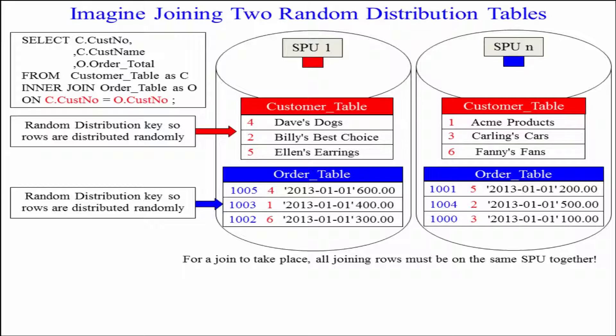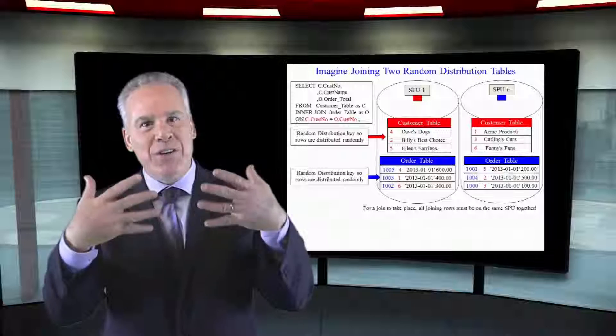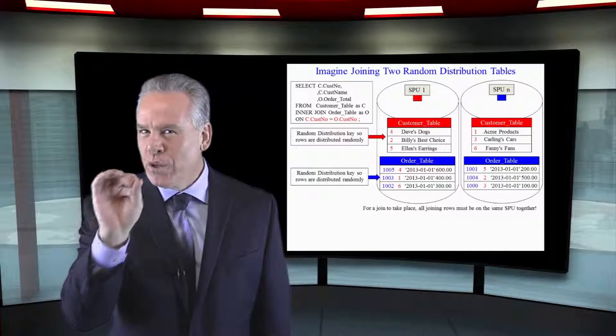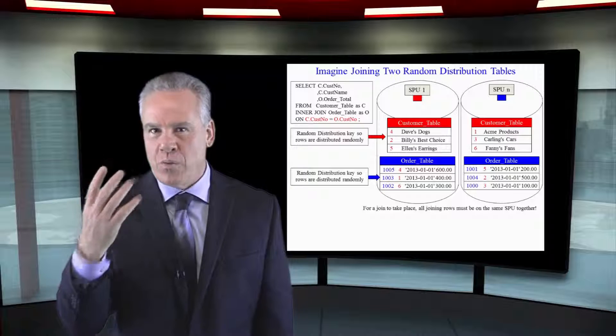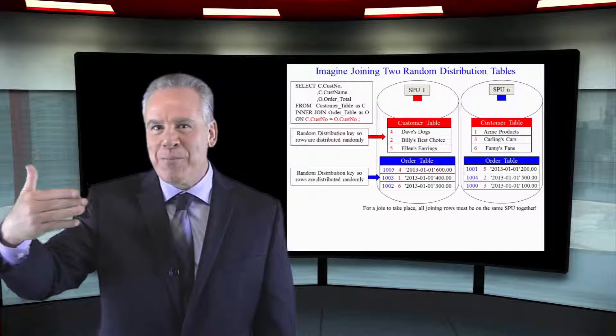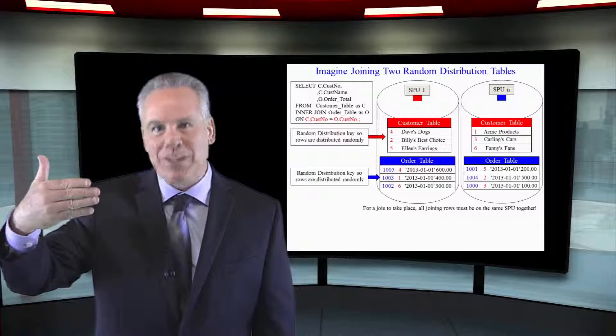Hey folks, if these are two large tables, the Tees has only got one choice: redistribute one of them by customer number, and then redistribute the other one by customer number. And then and only then will the matching rows be on the same spool. That's the real difficulty with distribute on random — if you distribute a table on random and it has to join to another table, it's probably going to be redistributed.